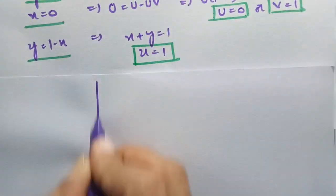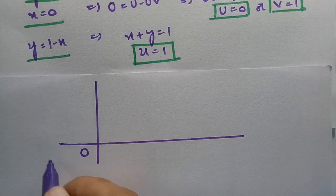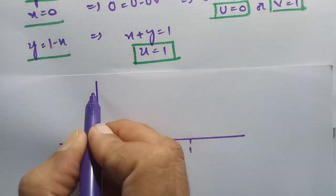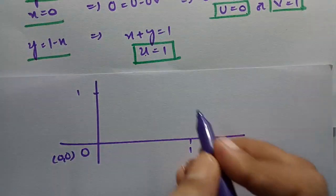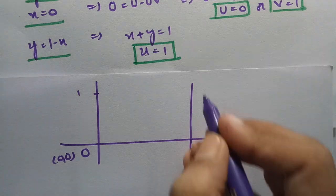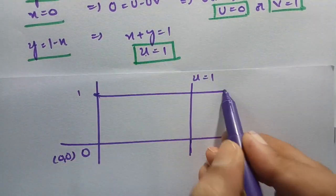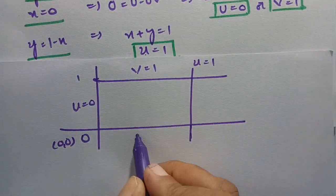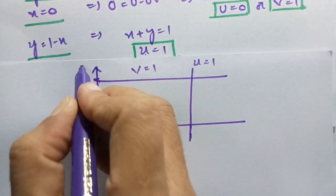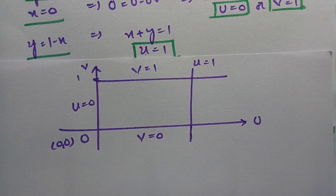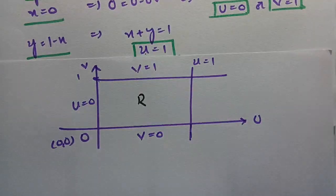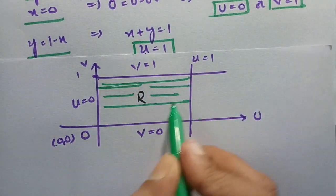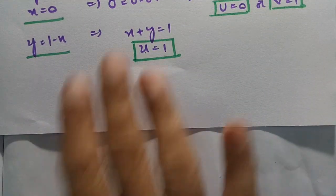In the uv-plane the transformed figure has origin (0,0), with the line u equals 1, the line v equals 1, u equals 0, and v equals 0 forming a unit square. This is the new region R'. The original triangular region R in xy has been transformed into this unit square in the uv-plane.